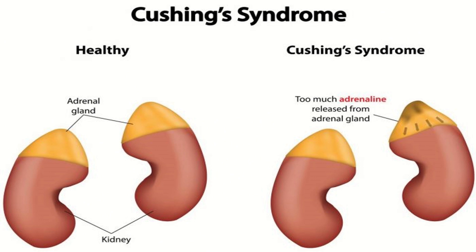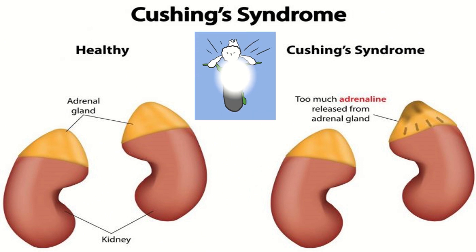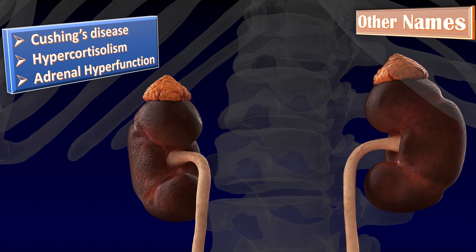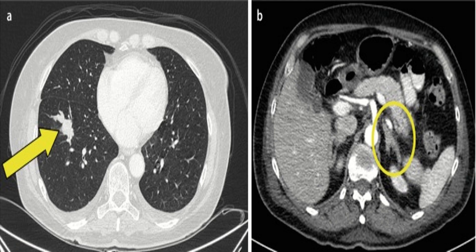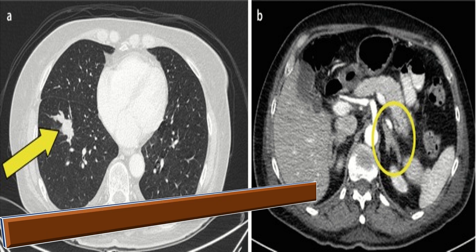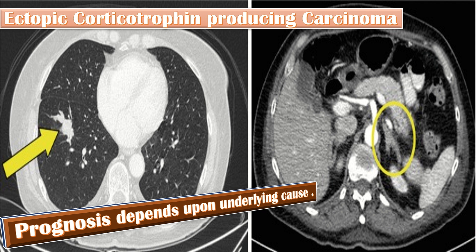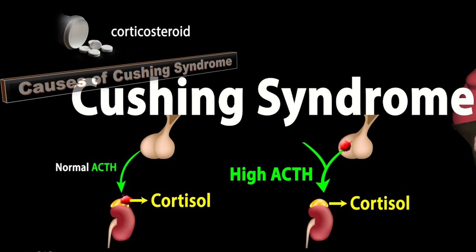As you can see, compared to healthy adrenal glands, in Cushing syndrome too much cortisol is released from the adrenal gland. Cushing syndrome is also called Cushing disease, hypercortisolism, or adrenal hyperfunction. The prognosis depends on the underlying cause and is poor in untreated people and in those with untreated ectopic corticotropin-producing carcinoma.